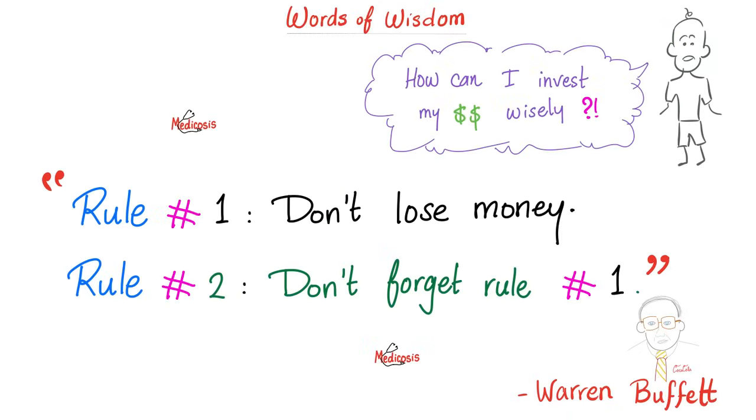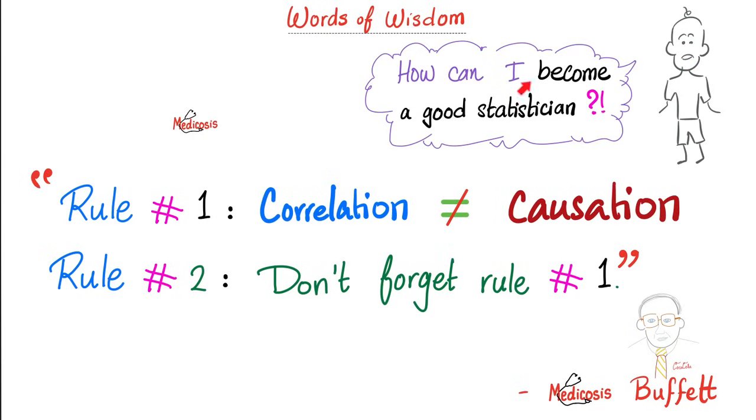A dude bro once asked Warren Buffett, quote, how can I invest my money wisely? The Oracle of Omaha responded, rule number one, don't lose money. Rule number two, don't forget rule number one. If a student asks Medicosis, how can I become a good statistician? Easy. Rule number one of statistics is the fact that correlation is not the same as causation. Rule number two, please refer back to rule number one.